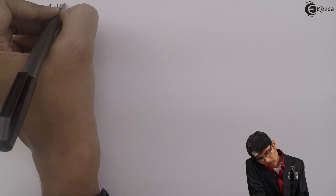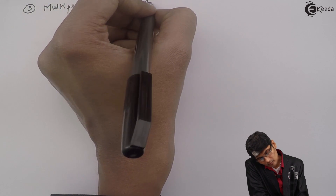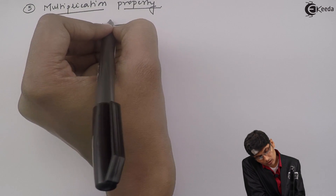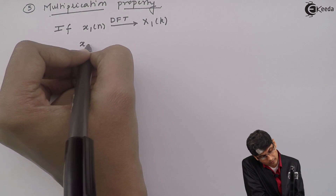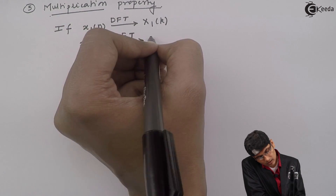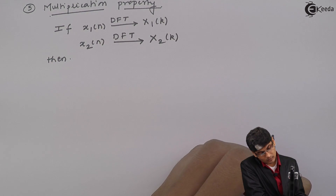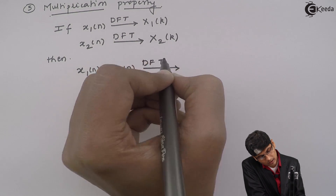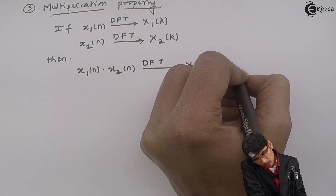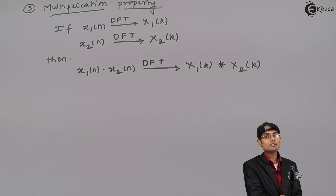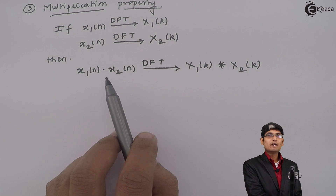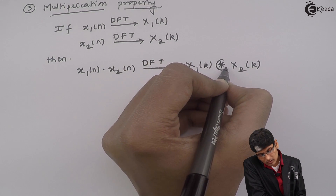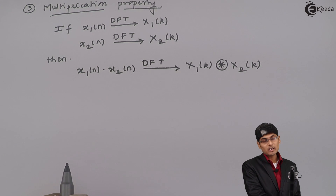The fifth property is the multiplication property. If x1(n) has DFT X1(k) and x2(n) has DFT X2(k), then multiplying x1(n) by x2(n) in the time domain results in a DFT corresponding to X1(k) circularly convolved with X2(k) in the frequency domain. This convolution is mandatorily a circular convolution because k is a periodic term.